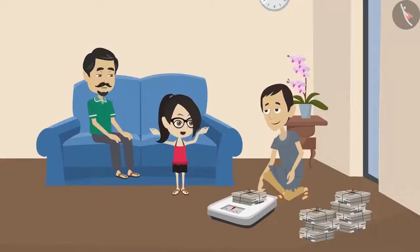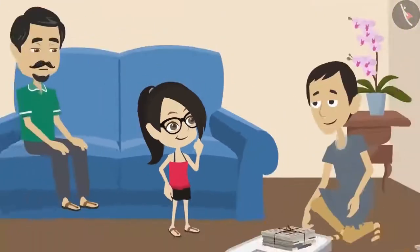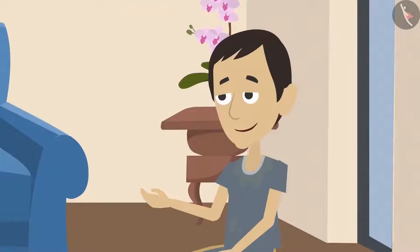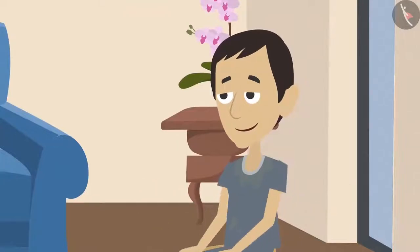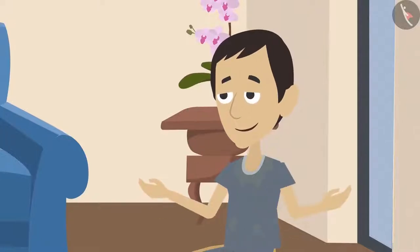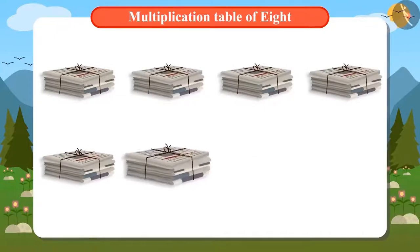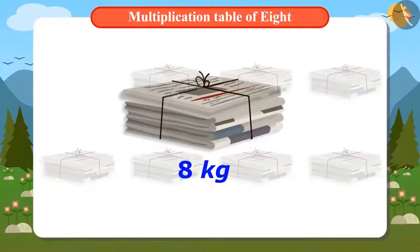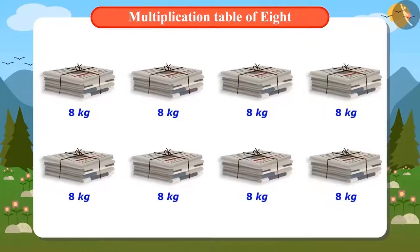Now let's weigh the remaining bundles as well. Vandana wants to weigh all the bundles, but the scrap dealer tells her that not all bundles need to be weighed. Each bundle would weigh the same 8 kilos. There are 8 bundles of newspapers in total — if one bundle is 8 kilos, can you tell us how many kilos of newspapers there are?